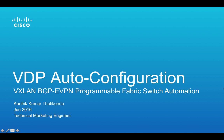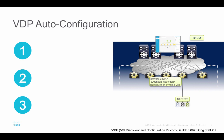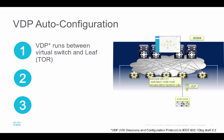Hello everyone, welcome to the video session: VDP Auto Configuration in VXLAN BGP EVPN Programmable Fabric. My name is Karthik and I'm a Technical Marketing Engineer at Cisco. VDP stands for VSI Discovery and Configuration Protocol — it is part of IEEE 802.1Q. BGP VDP runs between the leaf and the station, which is Nexus 1000V or OVS (Open vSwitch).